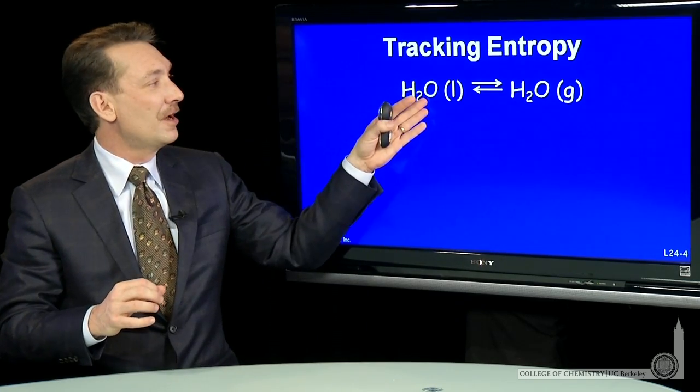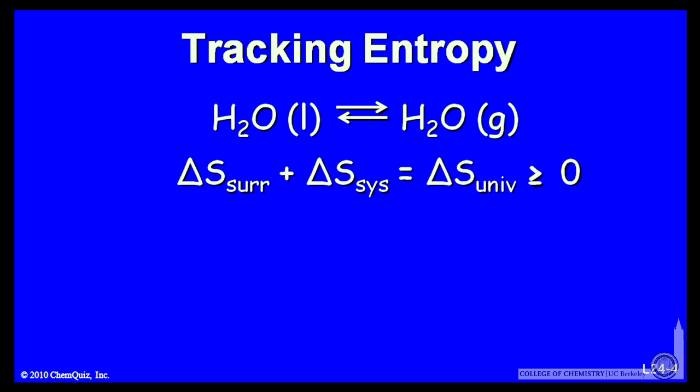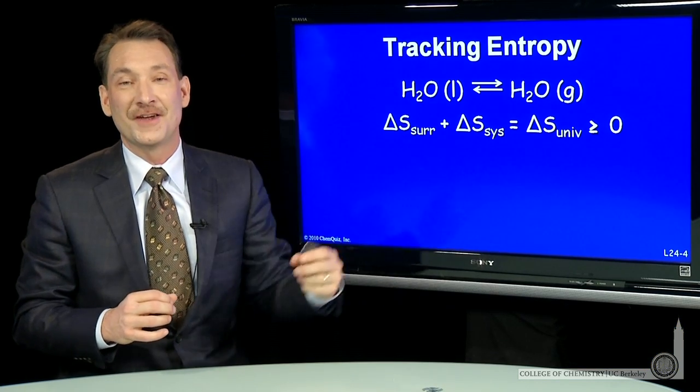Let's see if we can do that for the water liquid to water gas system. We're going to say the entropy change of the surroundings and the entropy change in the system give us the overall entropy change in the universe. And if that's greater than 0, then the forward direction is favored.